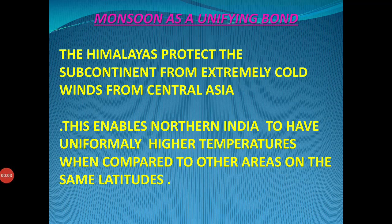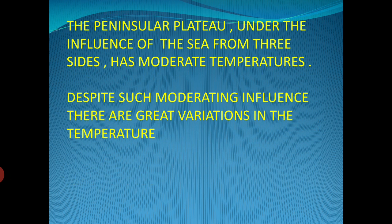Good morning, children. Let's understand how monsoon acts as a unifying bond. As you all know, to the north, the Himalayas protect the subcontinent from extremely cold winds from Central Asia. This enables northern India to have uniformly higher temperatures when compared to other areas on the same latitudes. The Peninsular Plateau, under the influence of the sea from three sides, has moderate temperatures.